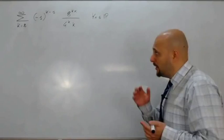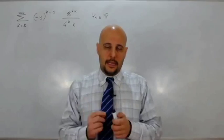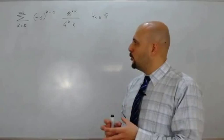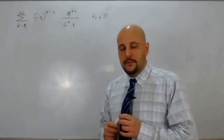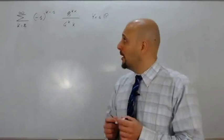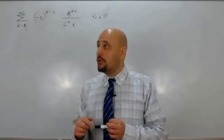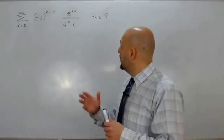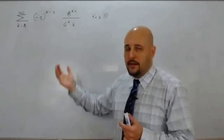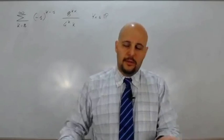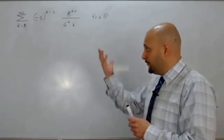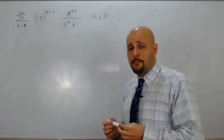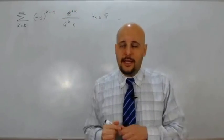Ultimo esercizio: determinare l'insieme di convergenza puntuale e la somma della seguente serie, sommatoria per k che va da 2 fino all'infinito, di meno 1 alla k meno 1, che moltiplica 8 elevato alla kx, tutto fratto 4 elevato alla k per k. Abbiamo fatto tre esempi di serie di funzioni riconducibili alla serie modello del logaritmo.